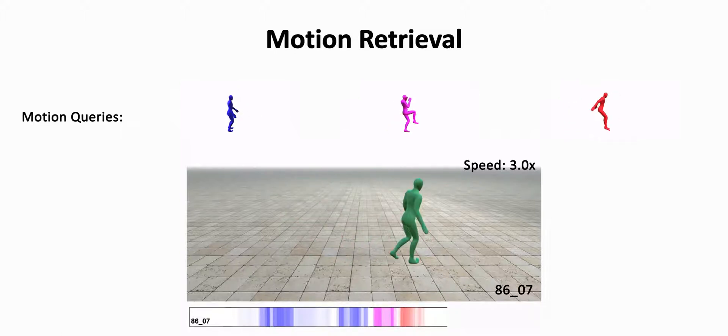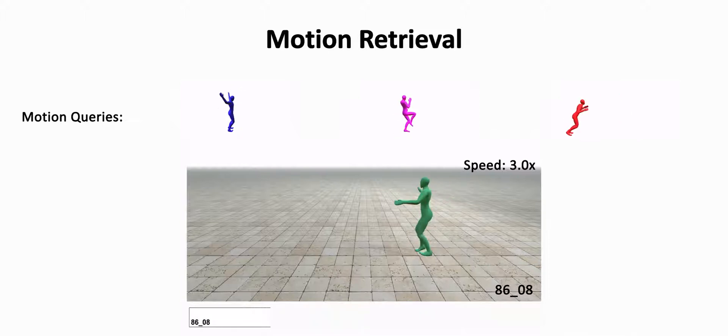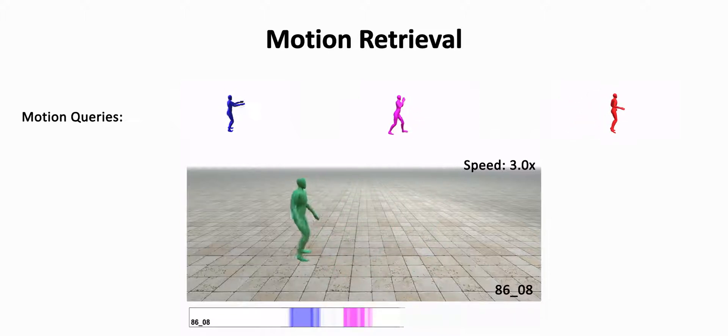Here, the motion sequence queries are shown at the top and the bars illustrate the similarity of their signatures to the motion shown in the window. The hue color of the bar corresponds to the matched motion query, and the color strength is proportional to the similarity to the query.